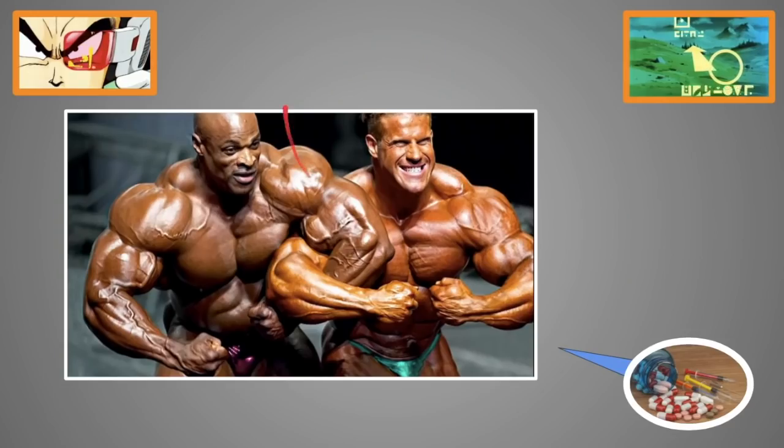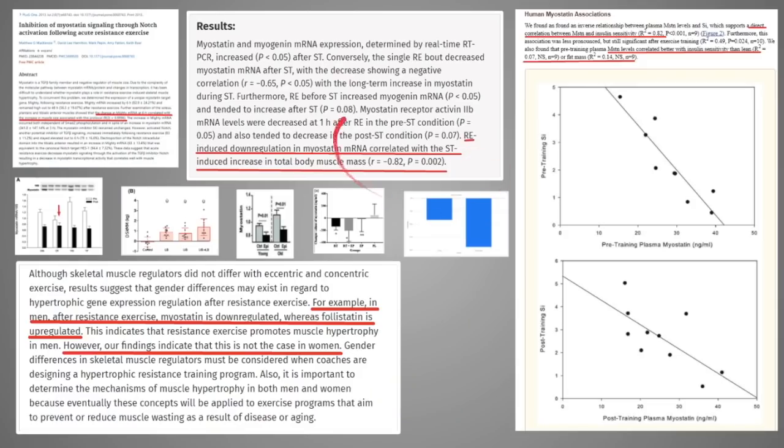Even IFBB bodybuilders, the reason why they look so-called freaky and so huge is mainly because every single steroid, every single PED that increases muscle mass pretty much interferes with the myostatin pathway. So even if myostatin goes up, they usually increase follistatin or find ways to inhibit its activity through IGF-1 or other pathways.